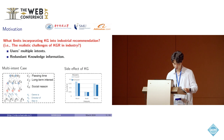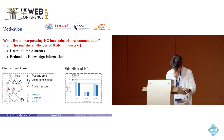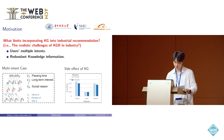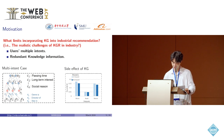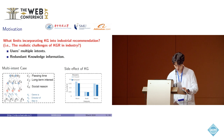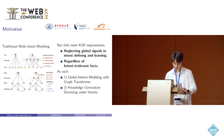Looking back at the left figure, intent one — passing time — is actually related with knowledge relations and entities. For example, for a movie, the user likes it for its genre, name, or content. And for intent K, the user likes it due to a friend's recommendation and due to its name or content. So we need to consider all kinds of heterogeneous information in our intent modeling.